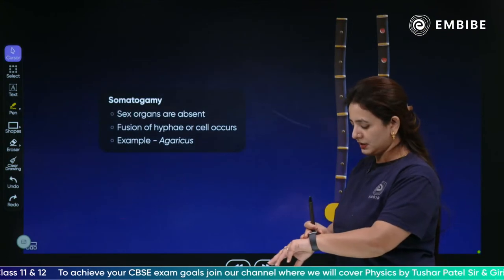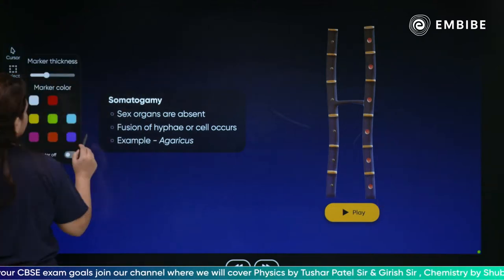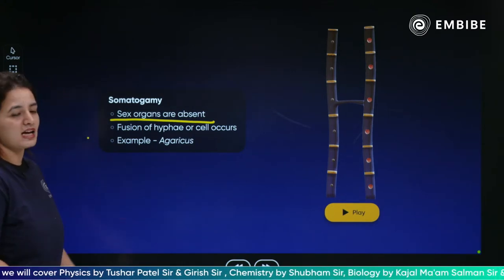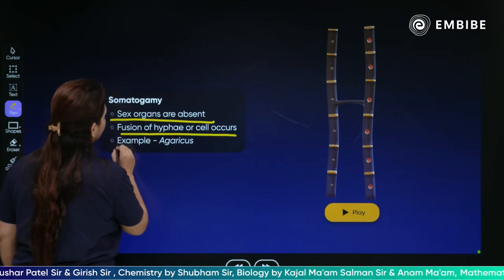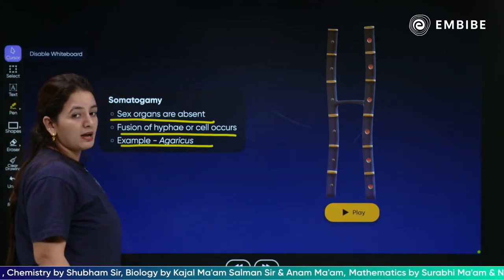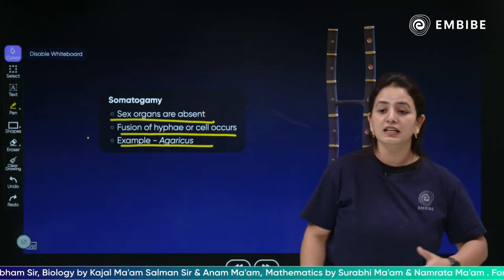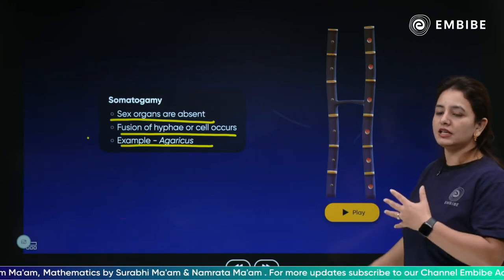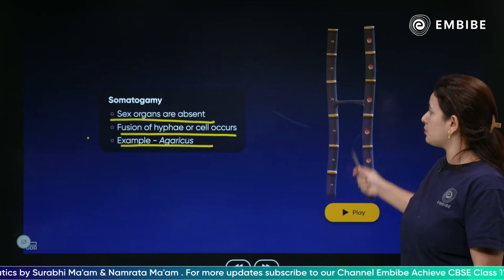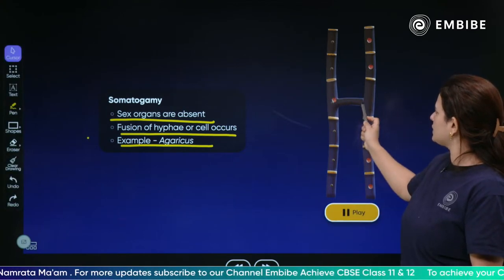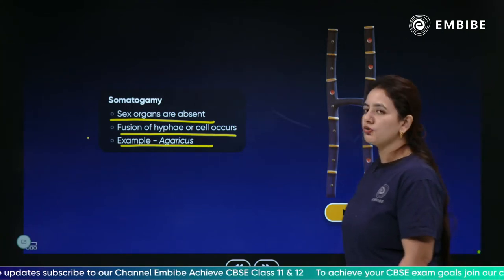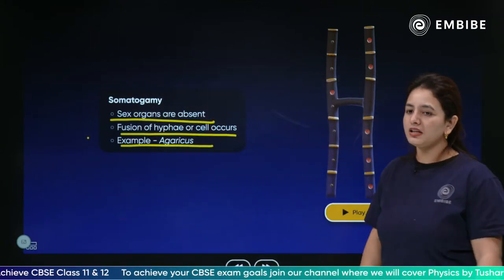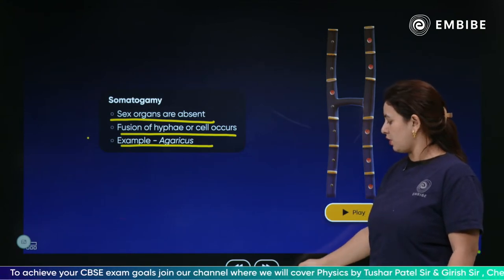The next is somatogamy. Talking about somatogamy, sex organs are absent - yet it is a type of sexual reproduction. The fusion of hyphae occurs and this kind of reproduction takes place in Agaricus. Somatogamy is the fusion of the hyphae. Because the sex organs are absent, the fusion of hyphae takes place - they come in contact with each other, exchange material with each other, and finally reproduce through this whole fusion of the hyphae.